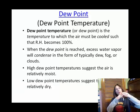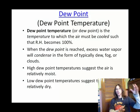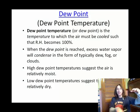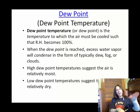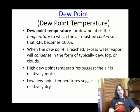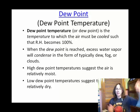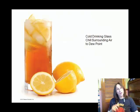If your dew point temperature is relatively low — for example, if your dew point temperature was 10 degrees Celsius — that means you have to cool the air down to 10 degrees Celsius in order to get 100% relative humidity, in order to reach saturation. So that means there's not much water vapor in your air. Your air is relatively dry.